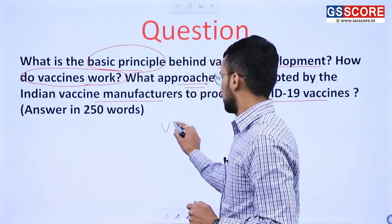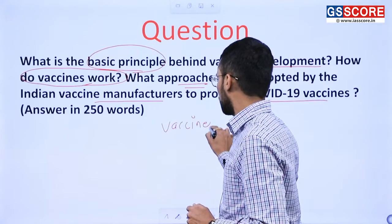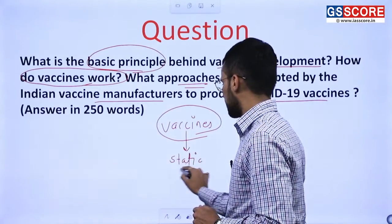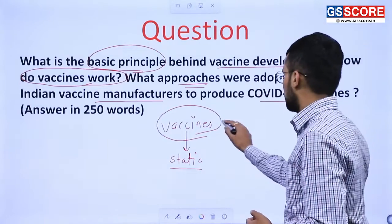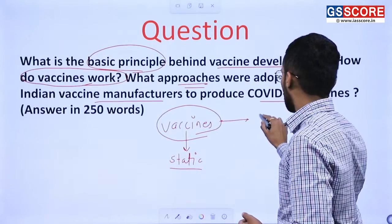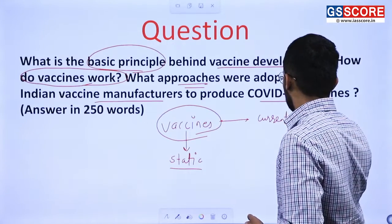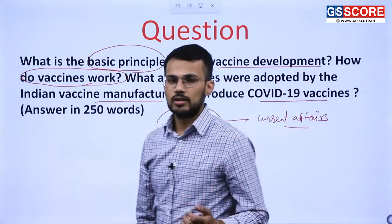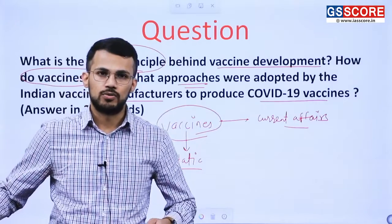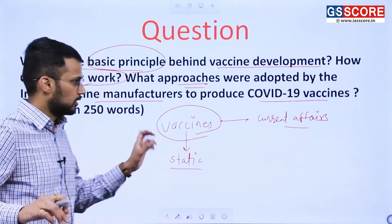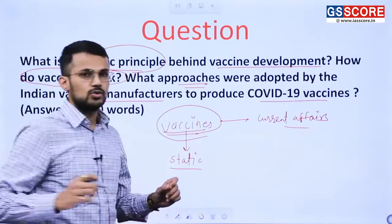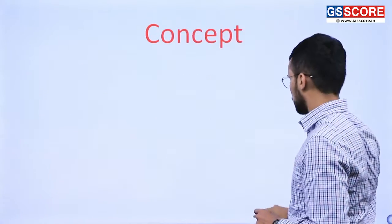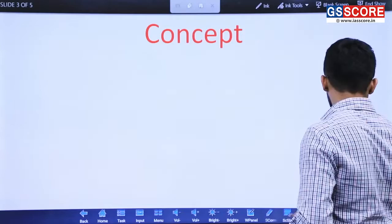The question is on vaccines. If we take into account this topic, we can say that it is a static portion — it is a part of the static syllabus. But vaccines were in news; vaccines were a part of current affairs. That is why UPSC asked this particular question by linking current affairs with the static syllabus of science and technology. The concept you should be aware of is vaccines.